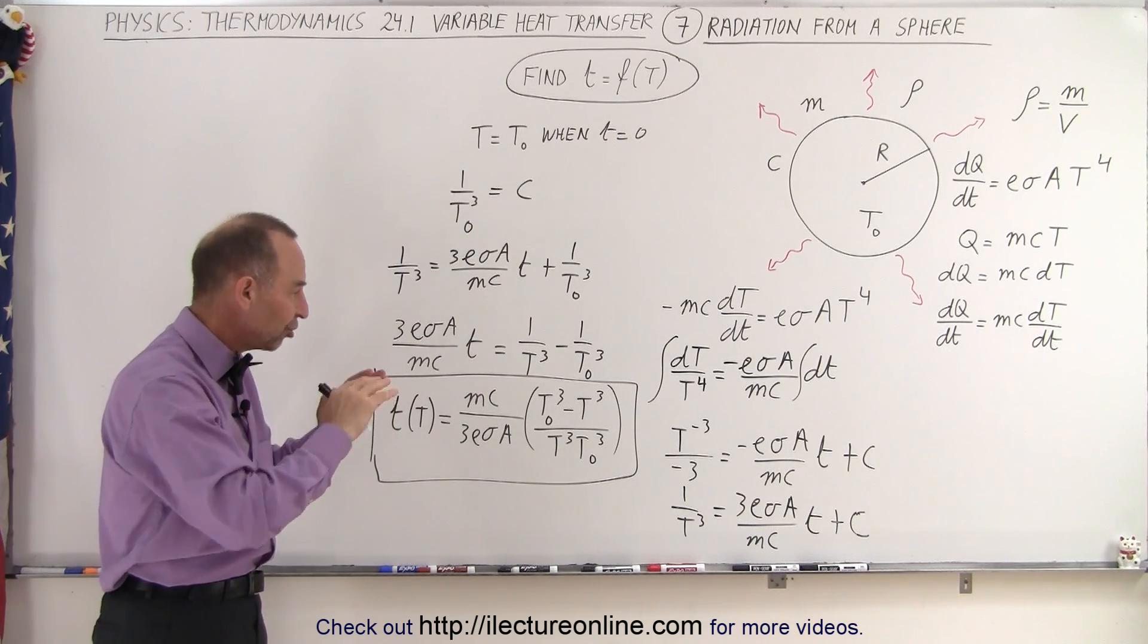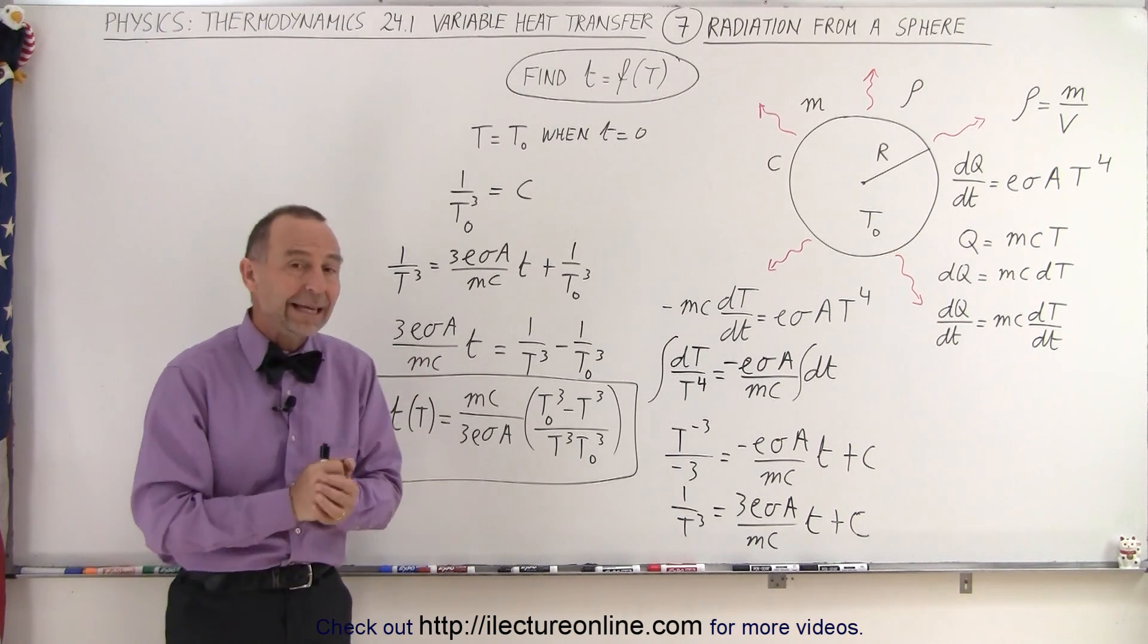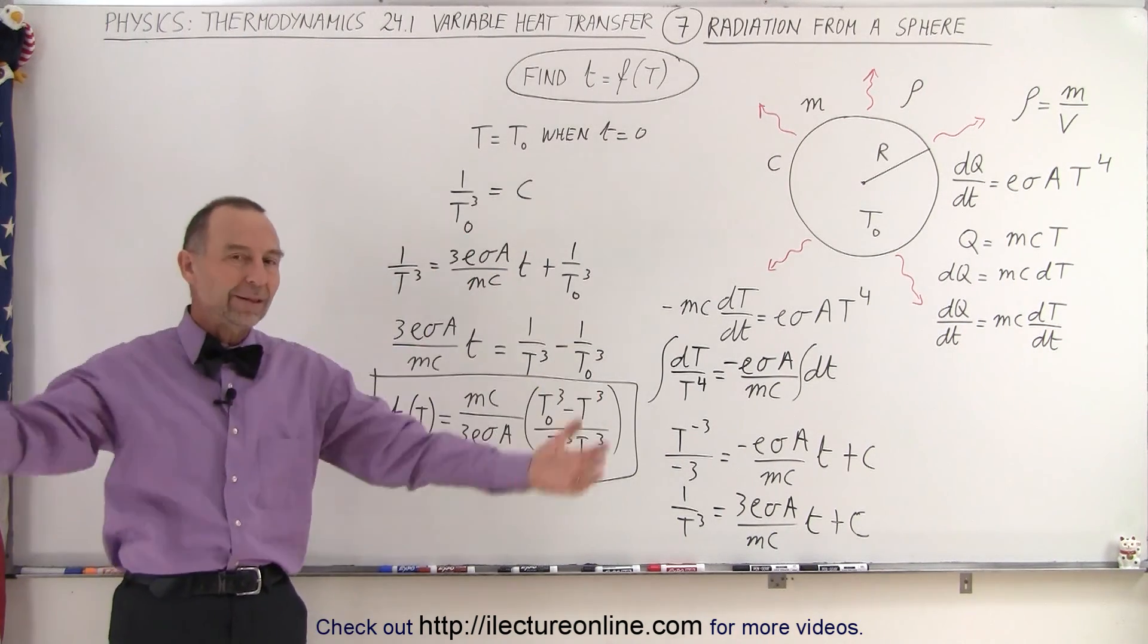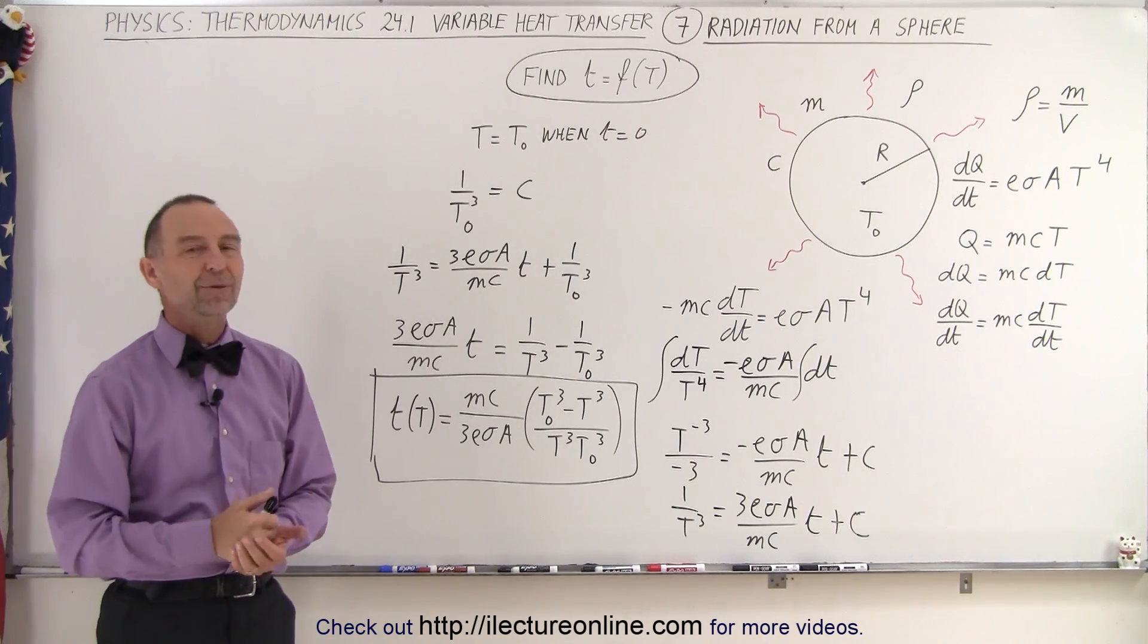So that's the equation, the general equation for a spherical object as it radiates heat into space assuming that the surroundings is at zero Kelvin. And that's how it's done.